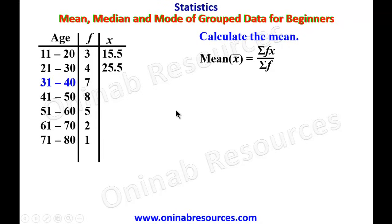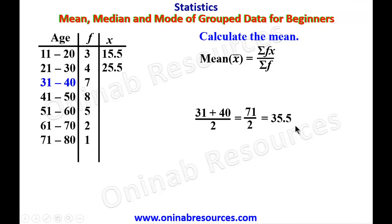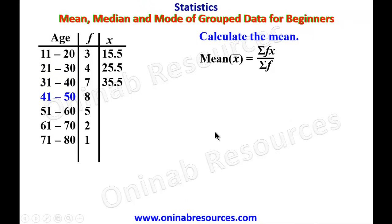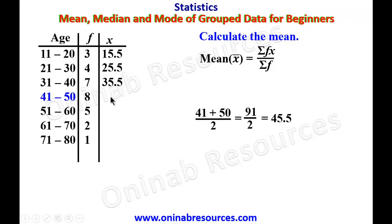We go to the next class interval, which is 31 to 40. We add 31 plus 40 and divide by 2 — that is 71 divided by 2, which gives 35.5. Then the next class interval is 41 to 50: 41 plus 50 divided by 2 gives 91 divided by 2, which is 45.5.